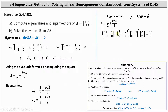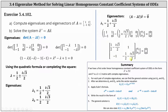Simplifying inside the parentheses, the result is the two by two matrix with entries one half minus i square root three divided by two, one in the first row, and negative one, negative one half minus i square root three divided by two in the second row. You may want to pause the video and verify this two by two matrix. Now we have this matrix times vector v equals a zero vector.